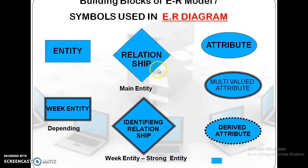These are the building blocks of your model. A rectangle is called entity, and a double-lined rectangle is called weak entity, or it is a dependent. This is a relation, this is an identifying relation, this is an attribute, and this is a multi-valued attribute, and this is a derived attribute.